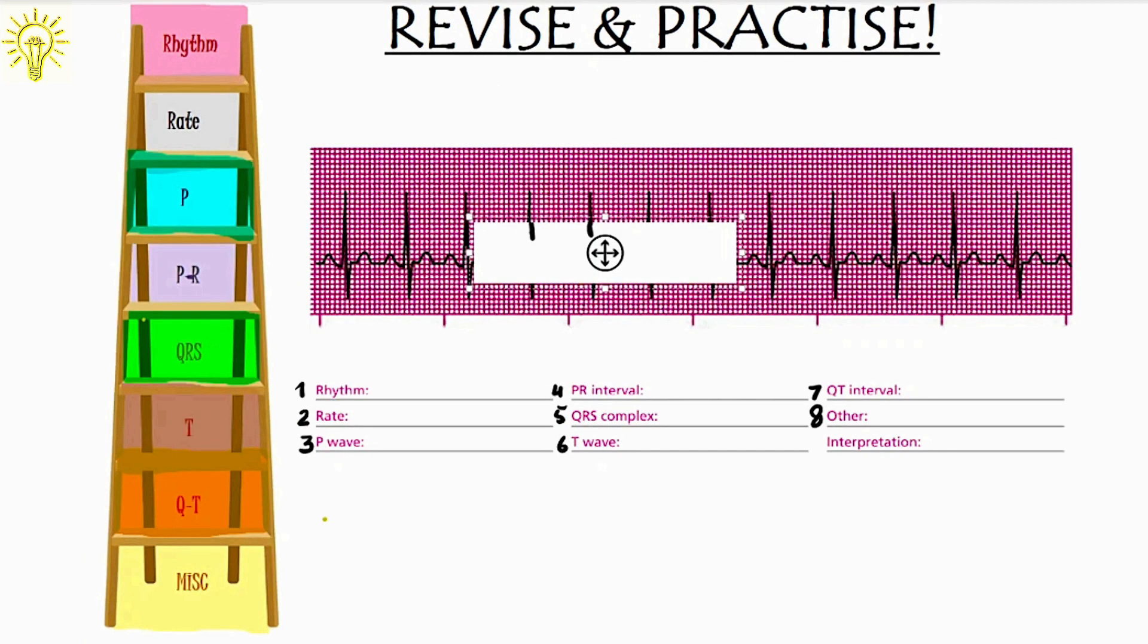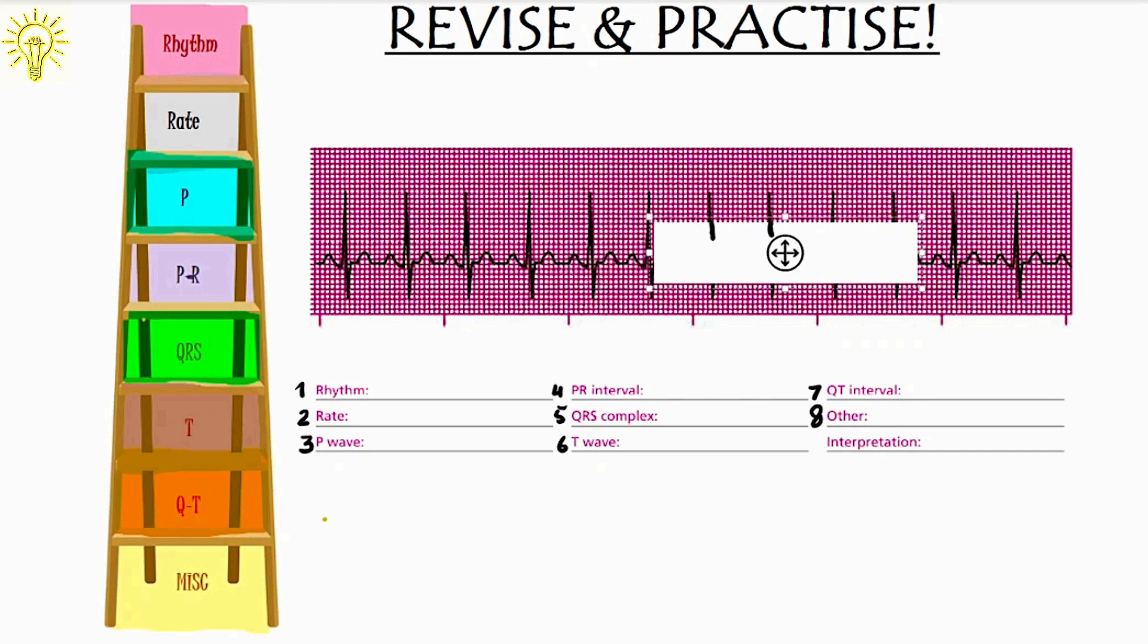In this ECG, the rhythm seems very regular. So, I would write it's a regular rhythm. The heart rate by 1, 2, this is 5 large box, this is 10 large box. So, 20 and 30 large boxes make 6 second strip. In this 6 second strip, I have 1, 2, 3, 4, 5, 6, 7, 8, 9, 10, 11 and 12. So, 12 into 10 is 120. So, rate is around 120 beats per minute.